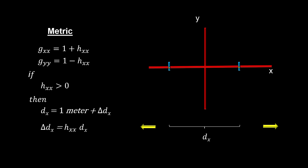When h is greater than zero, the distance between the two points on the x-axis becomes longer than one meter, by an amount equal to h times the original distance. At the same time, a one-meter distance on the y-axis will shrink to less than one meter by the same amount.